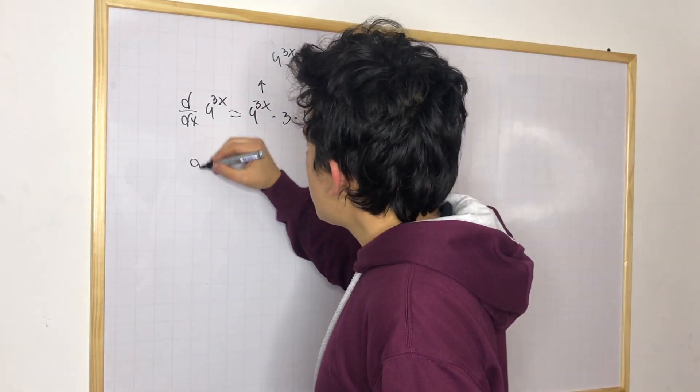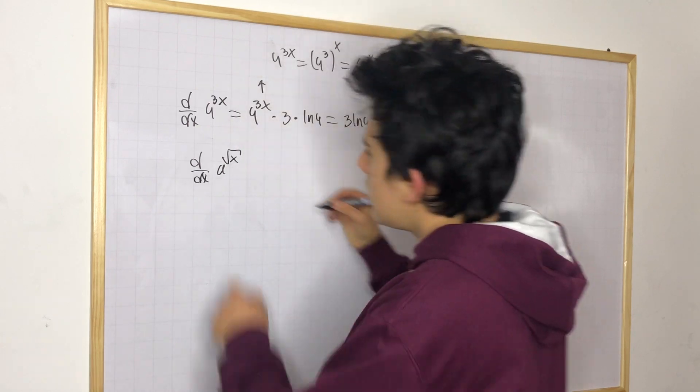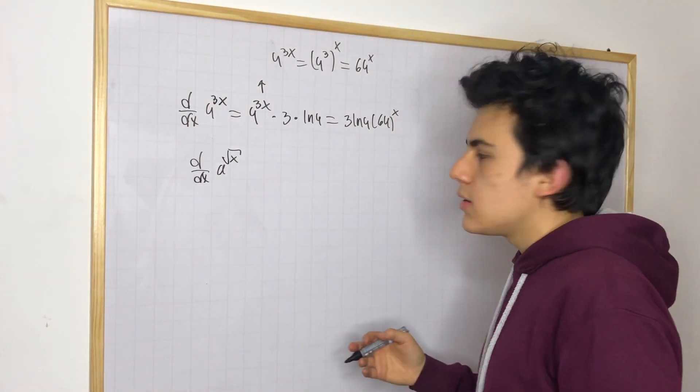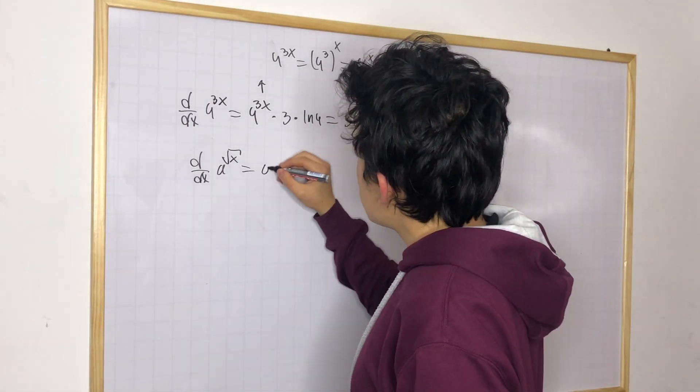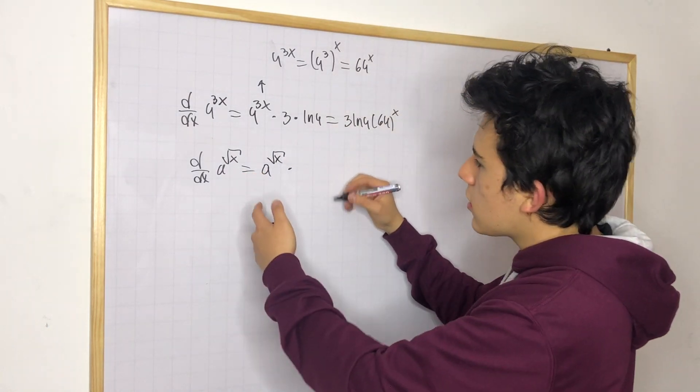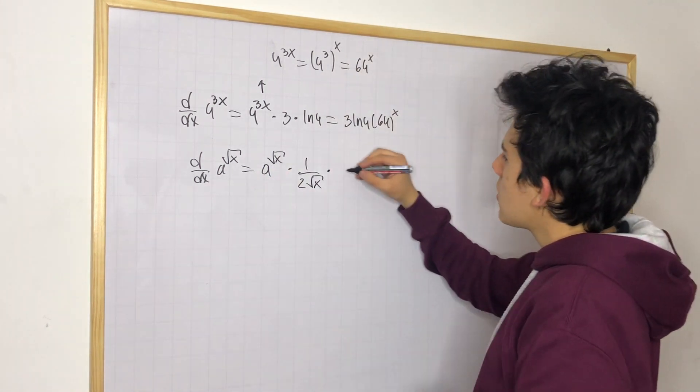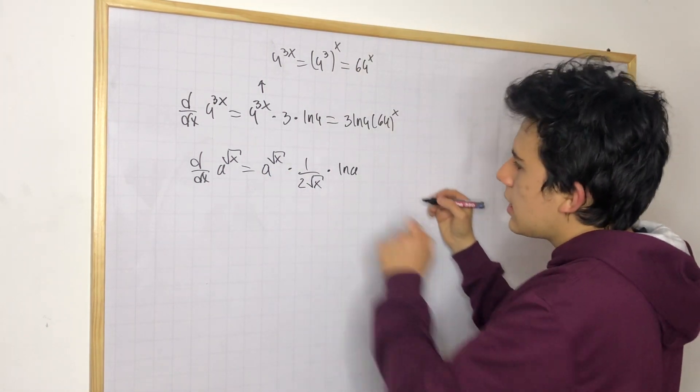Now, let's do the derivative of a to the square root x. In this case, a is going to be a constant. We know this is just simply going to be a to the square root x times the derivative of the exponent. We know that's just going to be 1 over 2 square root x times the natural logarithm of the base, which is ln a.